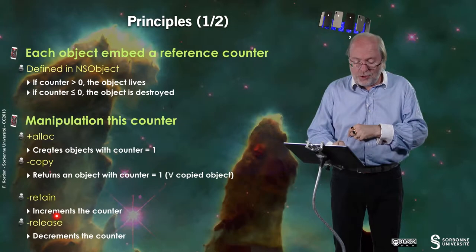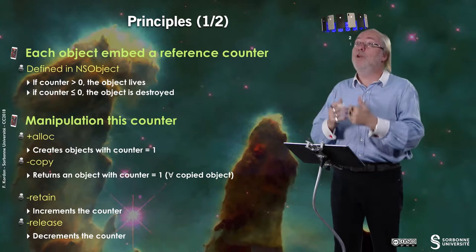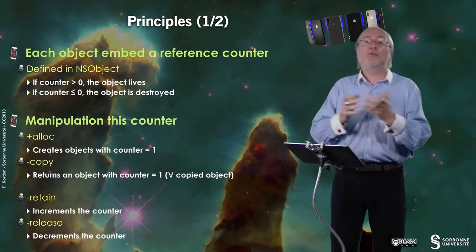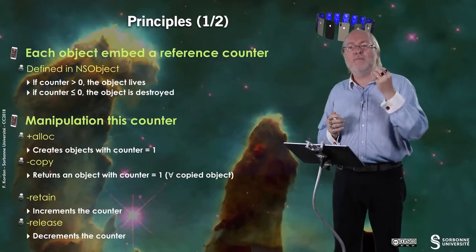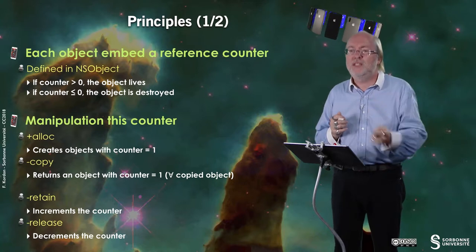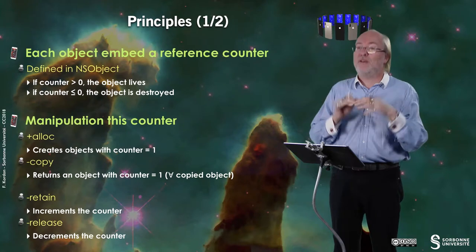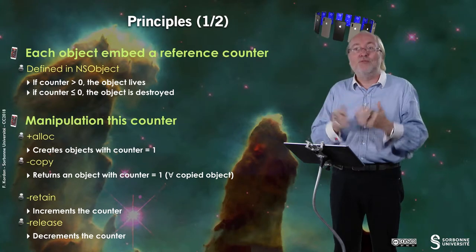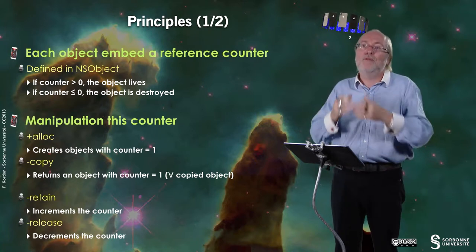And the other instructions that manipulate the counter are retain. Retain increments this counter, says I want to be a co-owner of this object. And release decrements the counter. You state that you do not want anymore to be a co-owner. So it means that I can manipulate a reference if I want to be sure that this reference will still be there for me. I retain this reference, so I increment the counter. So it means that if there was just one owner, there are now two co-owners. If the other owner decides to release the object, the object will still be there for me. If I forgot to do this retain, then the counter of this object will go to zero and the object will be deallocated as soon as possible. And then I will crash because I have a reference that goes to nowhere.